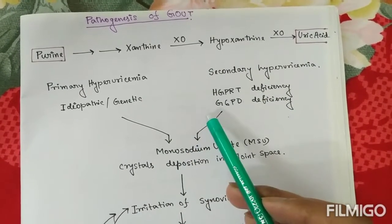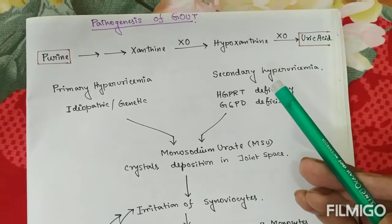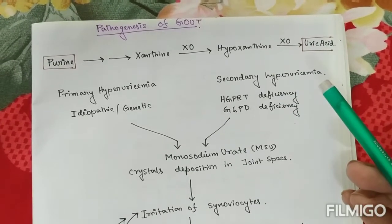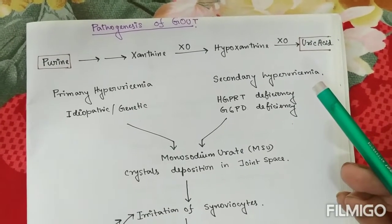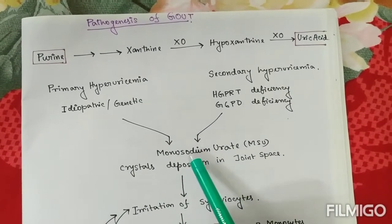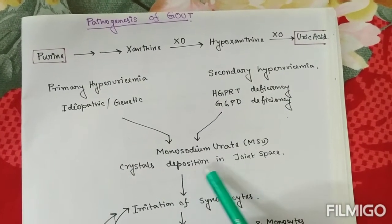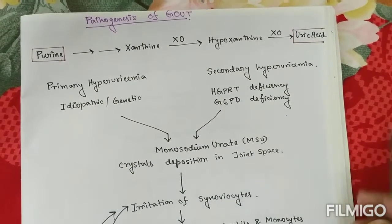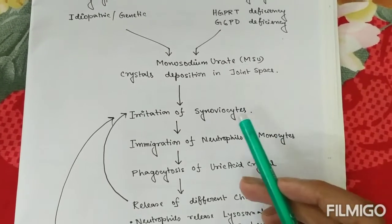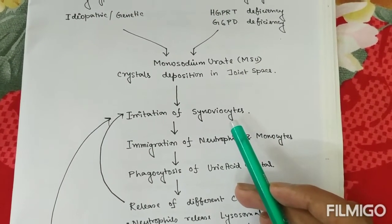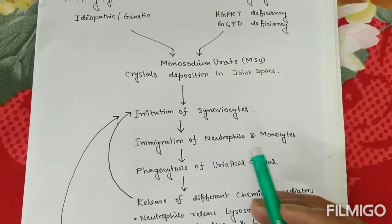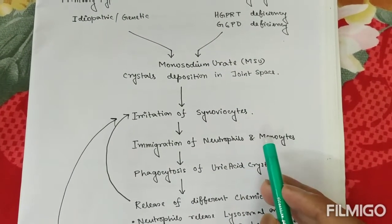Due to any cause, the excess uric acid in the blood will now deposit in the joint space in the form of crystals — monosodium urate crystals will deposit in the joint space. This will ultimately irritate the synoviocytes, the cells in the synovial membrane, and this will invite the immigration of neutrophils or monocytes.